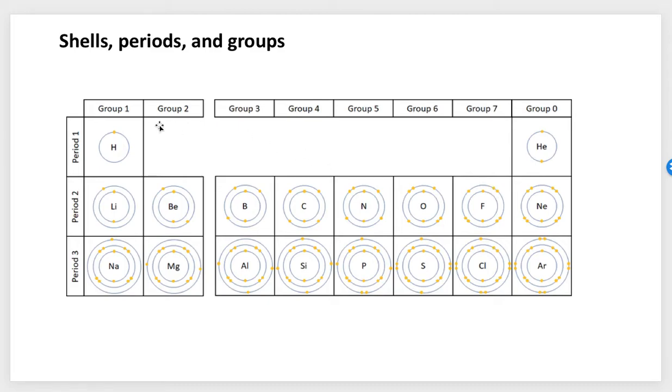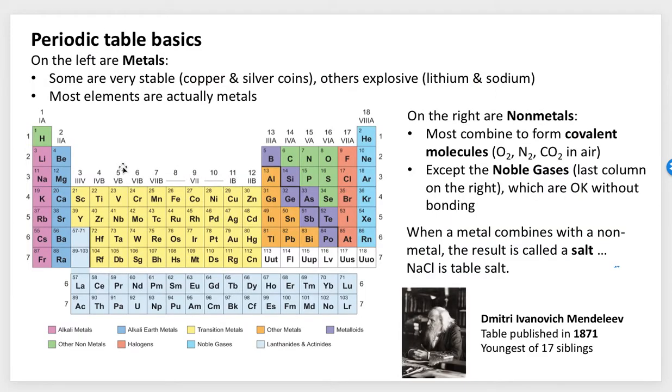Now to get to the periodic table, on the left, way over here, those are called metals. Some of you might recognize there is iron and copper and silver. A lot of metals are really stable.